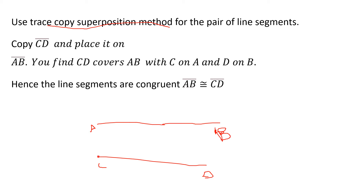Copy the CD line segment - measure it, get 5 cm, then place it on AB. When you keep it above AB, CD covers AB with C on A and D on B. If you are getting this result, what is the meaning? They are having equal measurement. Hence, the line segments are congruent - AB is congruent to CD.